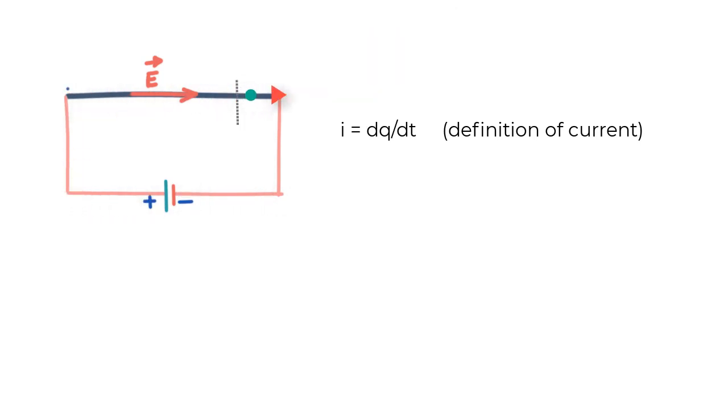Current is simply the rate at which charge moves through any cross sectional area of the wire. You can also see the units of current are coulomb per second or the more commonly used term you all know is ampere.